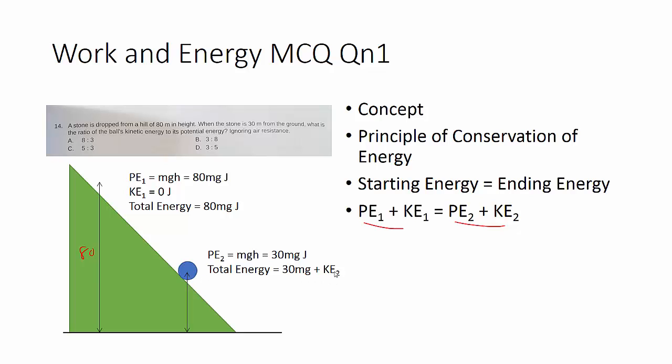So 30 plus the kinetic energy, which is unknown at this current point in time. But since we know that the total energy was 80 at the start, so 80 is substituted over here. So 80 is equal to this. And you can simply find out the kinetic energy is actually equal to 50 mg.